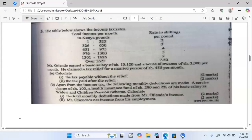And the question reads, the table below shows the income tax rates. We have the table which shows total income per month in Kenyan pounds and also tax rates in shillings per pound. The question further continues to say, Mr. Tiende earned a basic salary of shillings 13,120 and a house allowance of shillings 3,000 per month.